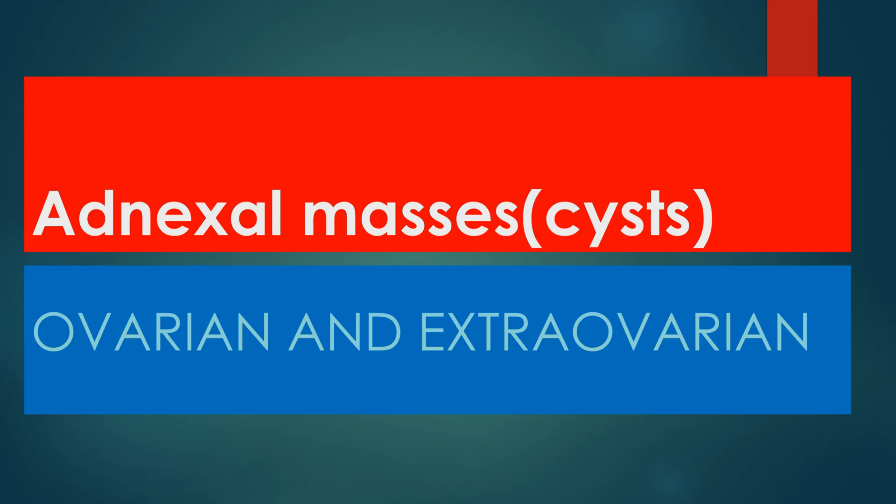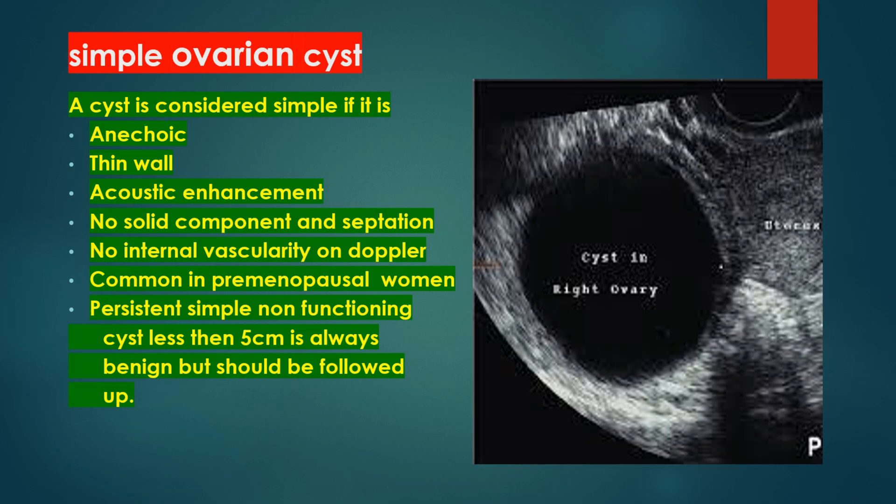First of all, simple cyst. A cyst is considered simple if it is anechoic, thin-walled with posterior acoustic enhancement, no solid component or septation, and no internal vascularity on Doppler. Simple cysts are common in premenopausal women. A persistent simple non-pulsatile cyst less than 5 cm is always benign but should be followed up.